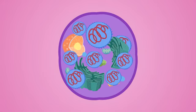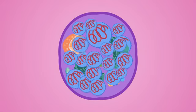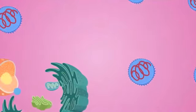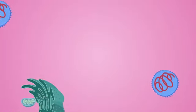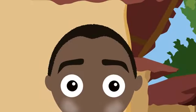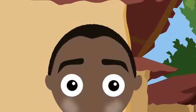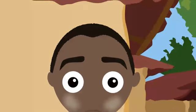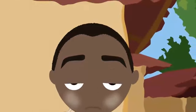The virus continues to reproduce until the cell bursts, releasing more viruses to neighboring cells, causing the virus to spread throughout the organism. And now Bob has contracted influenza, or the flu.